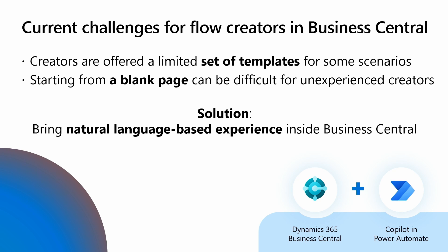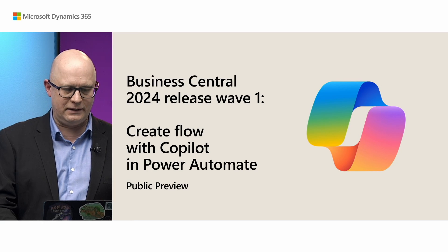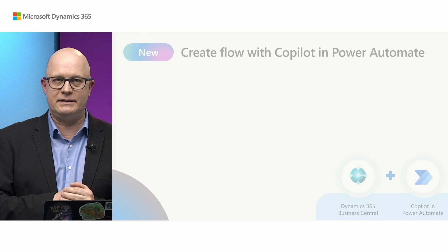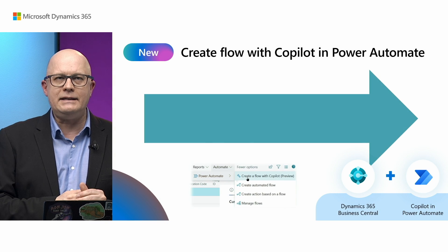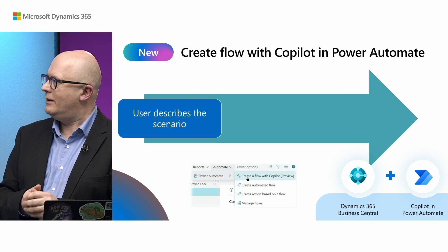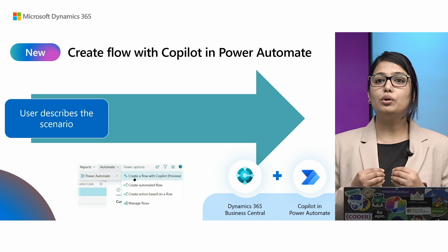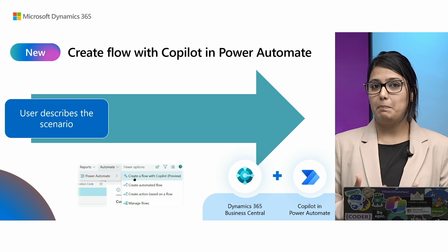This new feature allows you to create a new flow using just natural language. Imagine creating a flow with Copilot in Power Automate built directly inside Business Central. We have a new option under the Power Automate group that allows you to create a flow using Copilot in Power Automate.